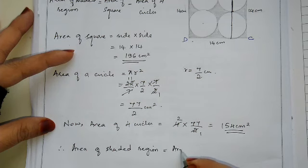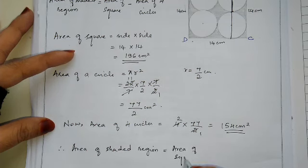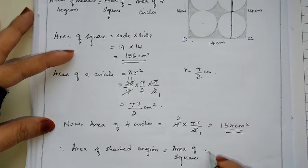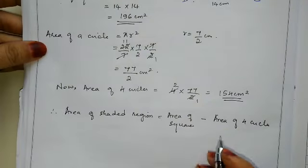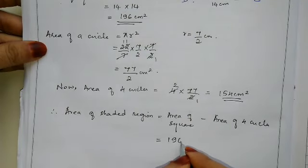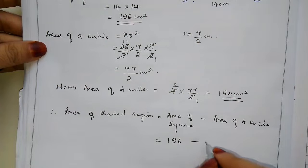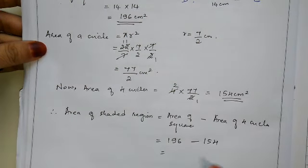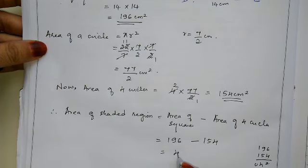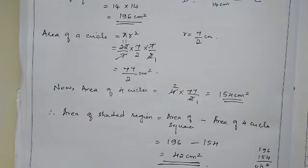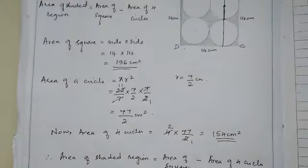Therefore area of shaded region equals area of square minus area of 4 circles equals 196 minus 154 equals 42 cm square. This is the area of the shaded region.